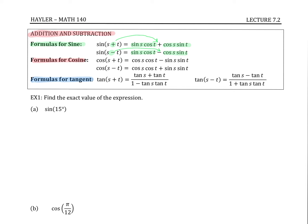Now for the cosine formulas — once again, there is an addition and subtraction version. However, for cosine, the addition switches to a subtraction when you write out the formula, and the subtraction switches to addition. Different from sine, for cosine, the beginning of both formulas are both cosines, and the last formulas are both sines.